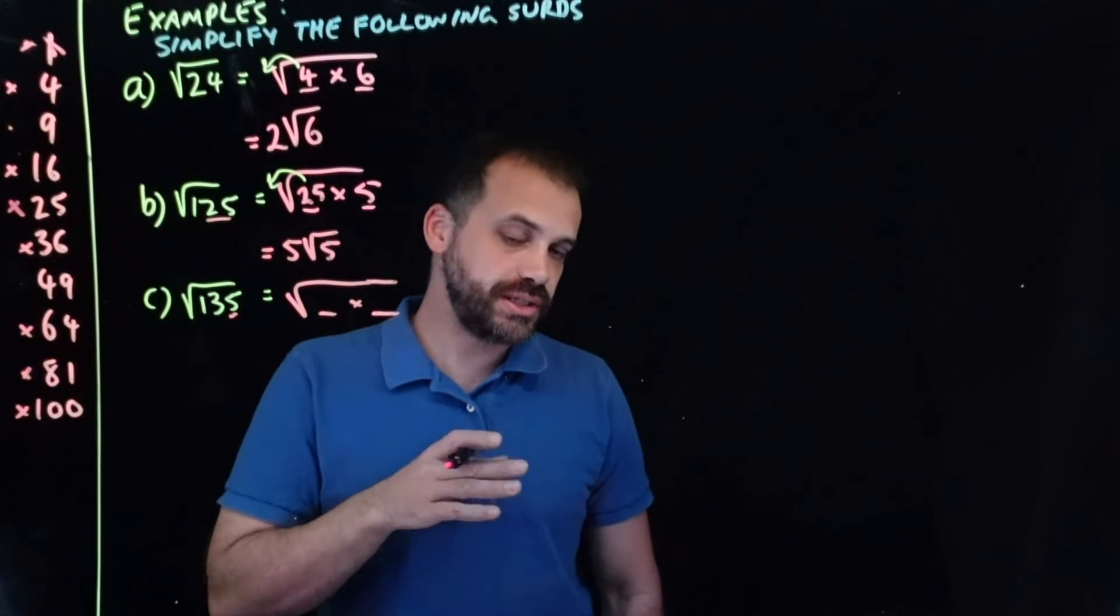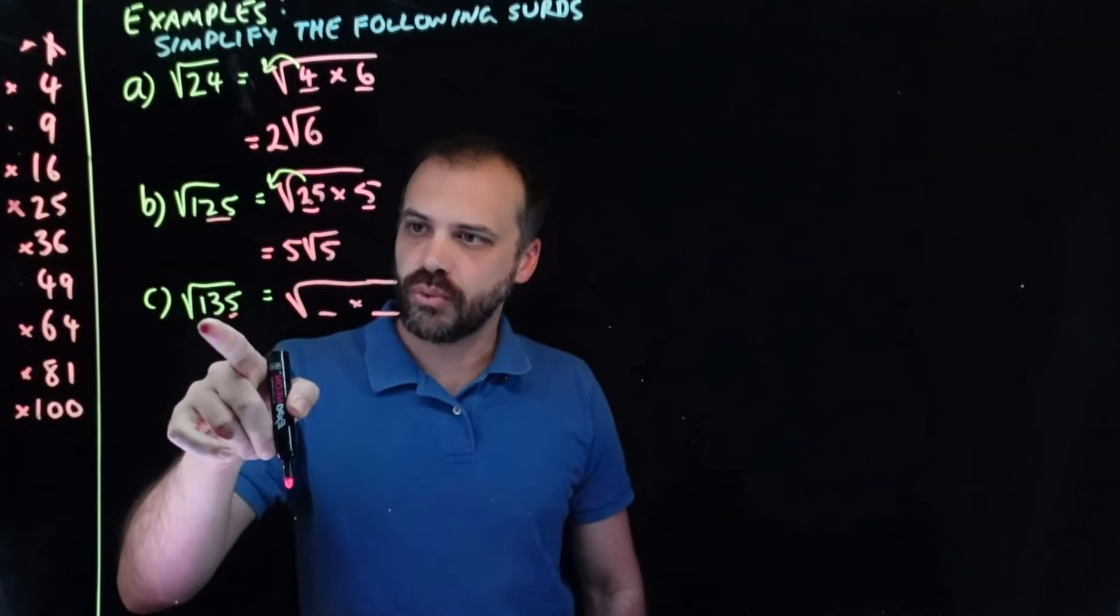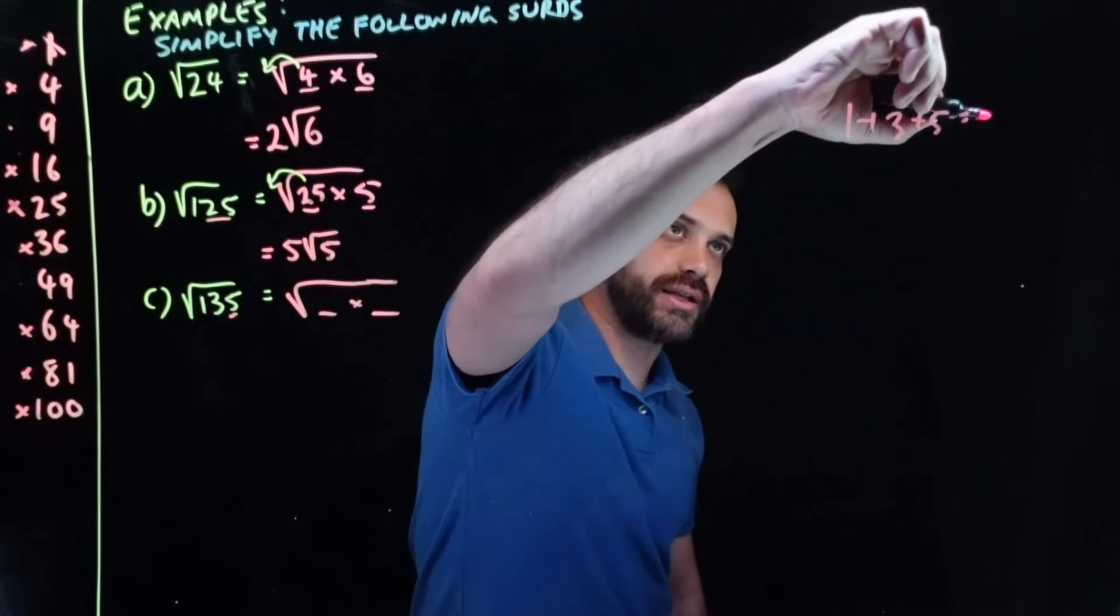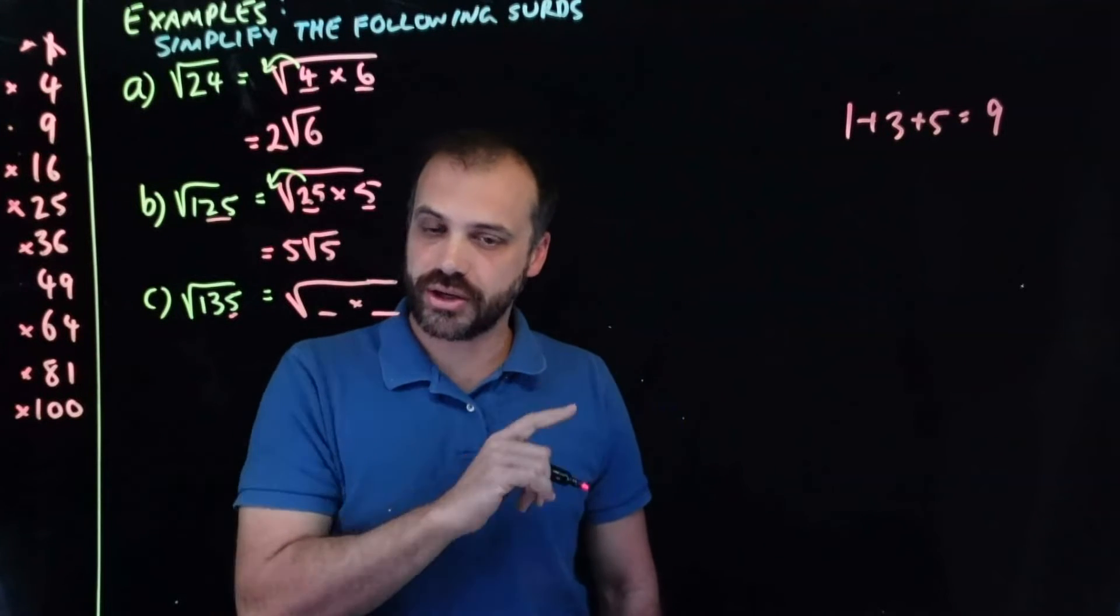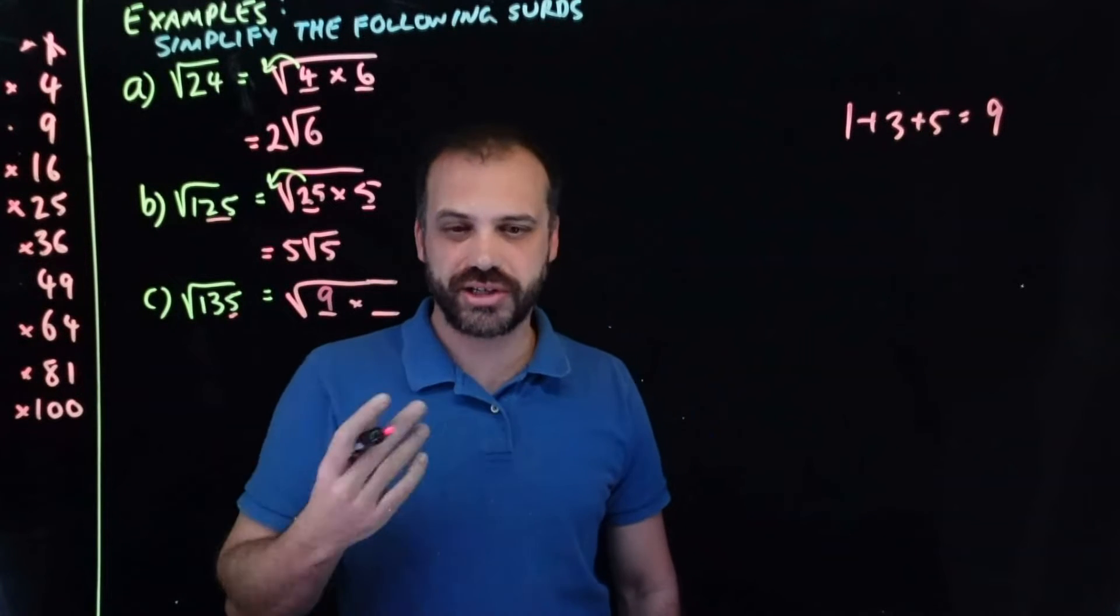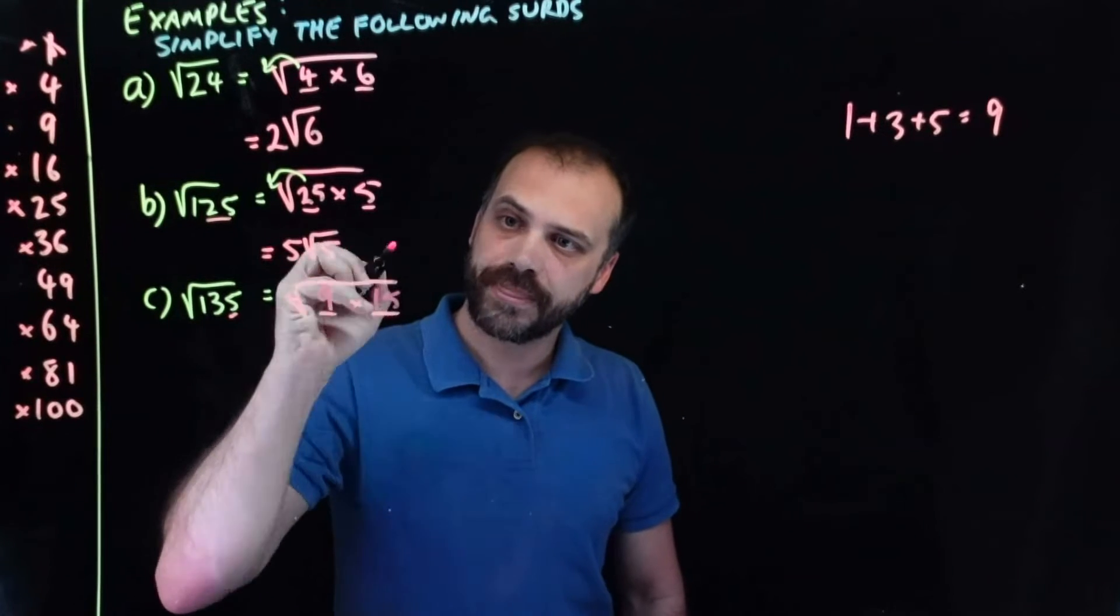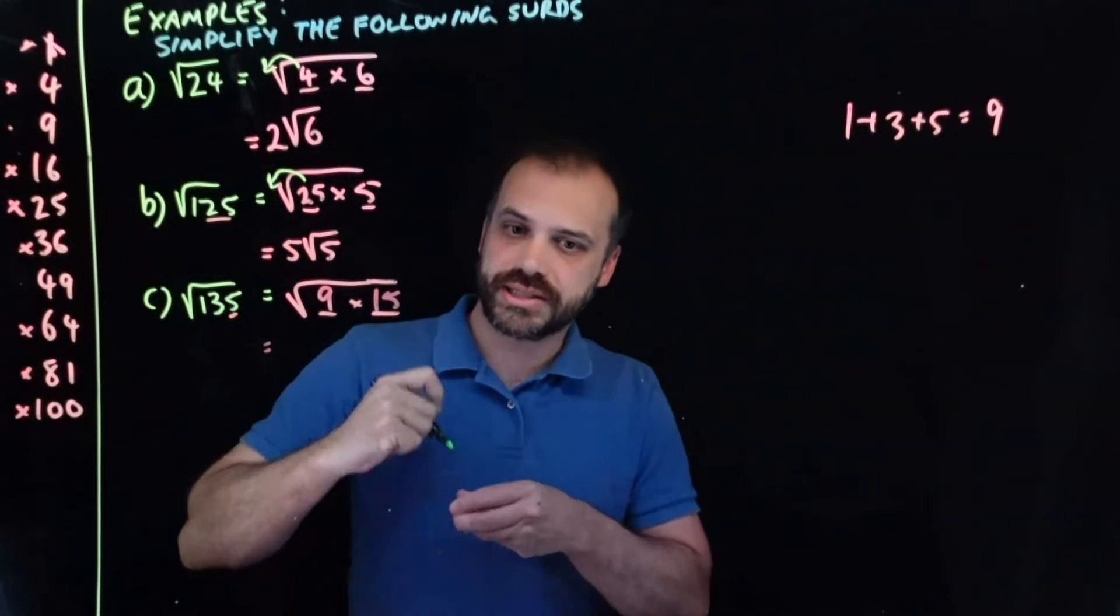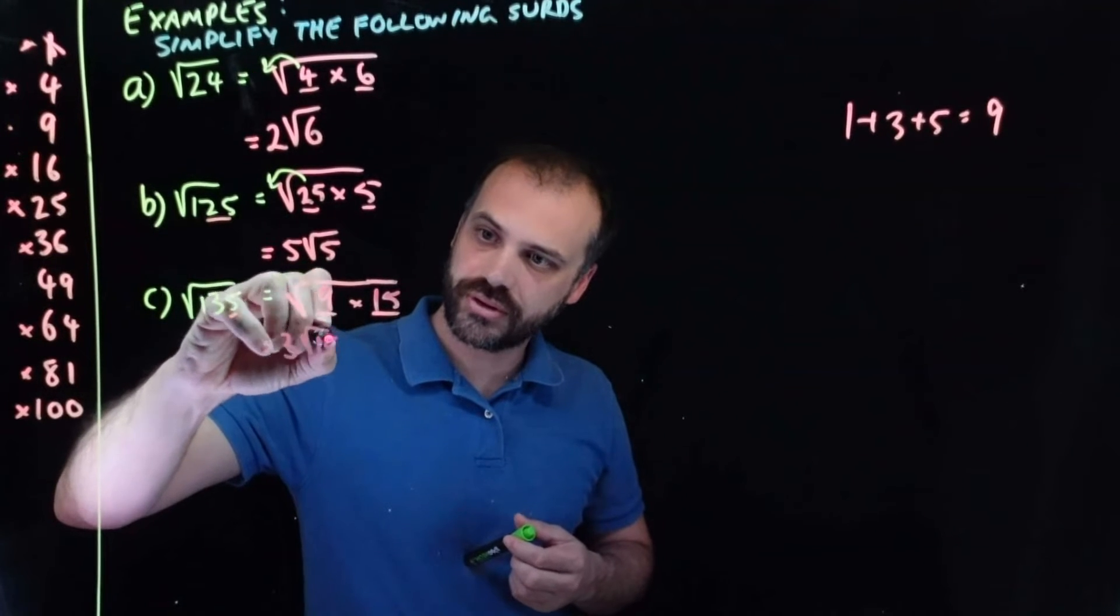Some of you might know the divisibility test for 9. If you don't, you're about to learn it. 1, 3, and 5. 1 plus 3 plus 5. When I add those numbers together, I get the number 9. If those numbers, 1 plus 3 plus 5, add up to 9, then the number is divisible by 9. So, I know for sure that 135 is divisible by 9. So, 9 times something is 135. If I divide that on my calculator, I find out that 9 times 15 is equal to 135. And now that I've done that, we can take this 9 out of here, and we're left with 3 root 15.